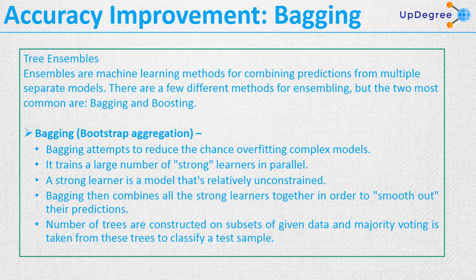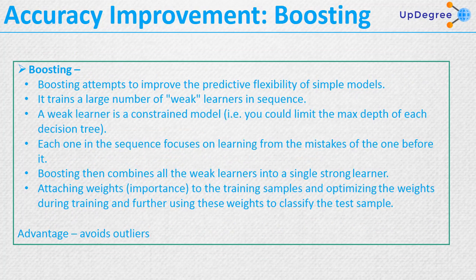A number of trees are constructed on subsets of the given data, and majority voting is taken from these trees to classify a test sample. That is the main idea behind bagging.